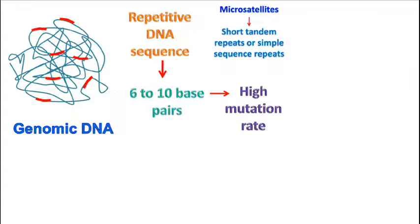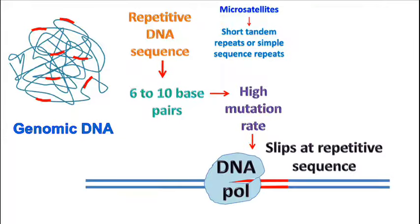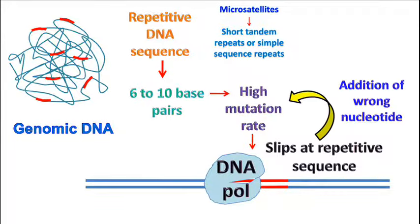The high mutation rate occurs because of the phenomenon of replication slippage experienced by DNA polymerase during replication. It has been observed that the repetitive DNA sequences present in the DNA can make the DNA polymerase unstable, resulting in addition of wrong nucleotides during replication.